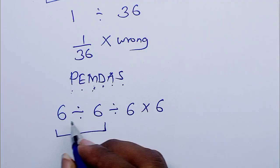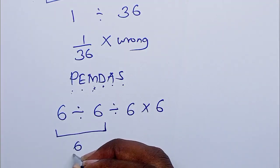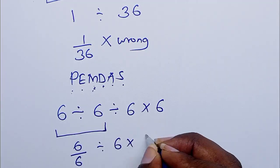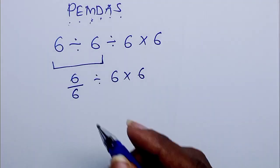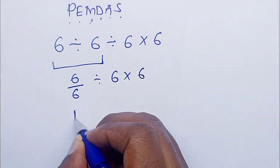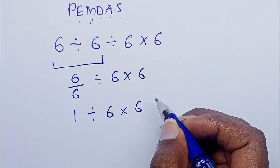So we work out 6 divided by 6, which is 6 over 6. Then divide by 6 times 6. 6 divided by 6 is 1. So 1 divided by 6 times 6.